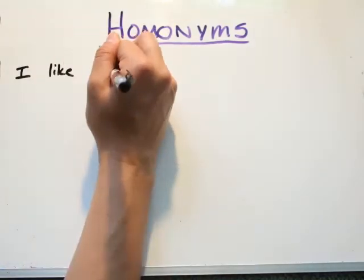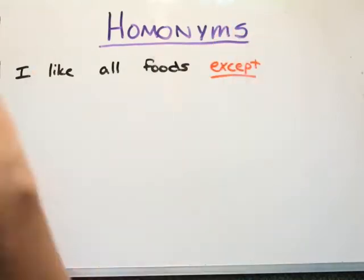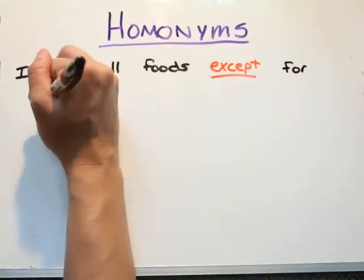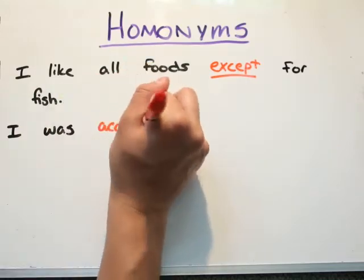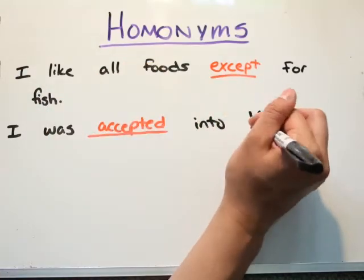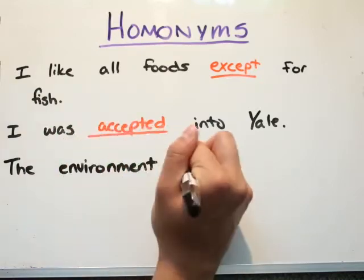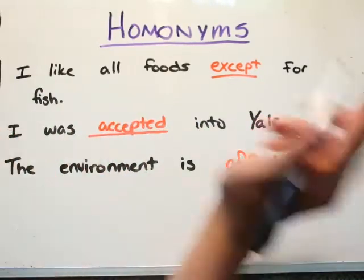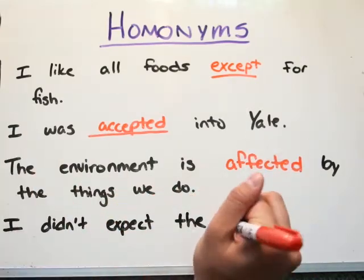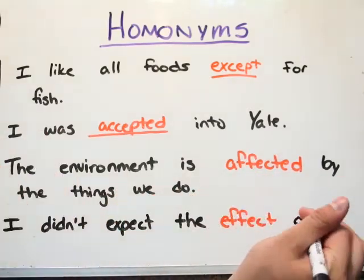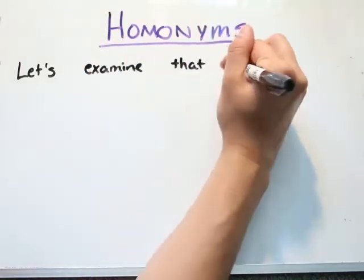'Except' with an E is a preposition — try substituting 'excluding' to see if it makes sense. 'Accept,' on the other hand, is a verb — try substituting 'received.' 'Effect' means to influence or to change; use this as a verb. 'Effects' means impression or results; use this as a noun.